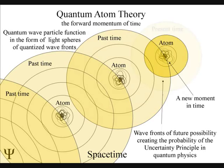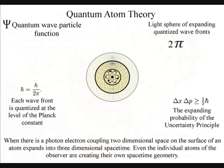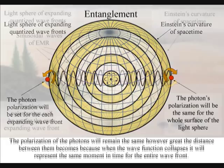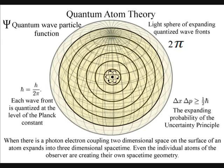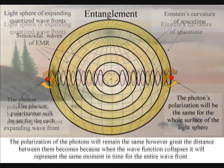Light moves in straight lines, but in three-dimensional space it will expand out in all directions forming light spheres. The polarization of the light will be the same for the entire surface of the light sphere, creating quantum entanglement and the symmetry and geometry of space-time.